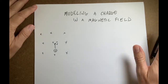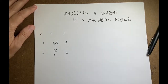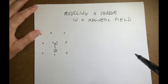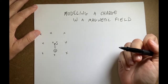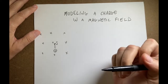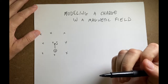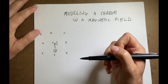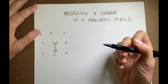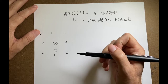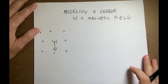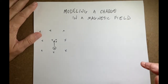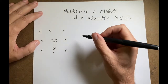I've already shown that a charge moving in a constant magnetic field will make a circular path. But I want to actually model that motion, not just calculate it. So we need to do a little work before we build our model and visualize this. It's going to be great, trust me.